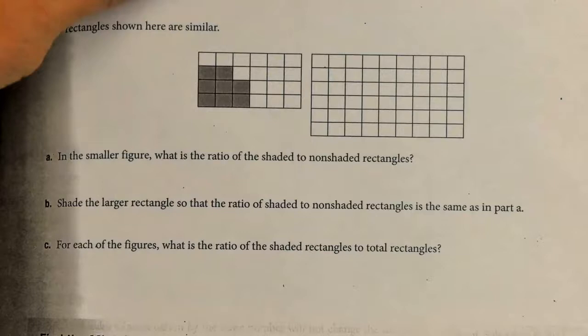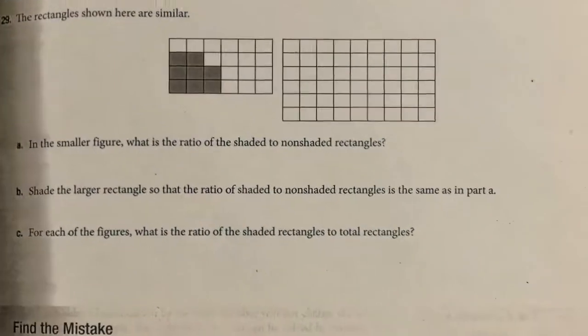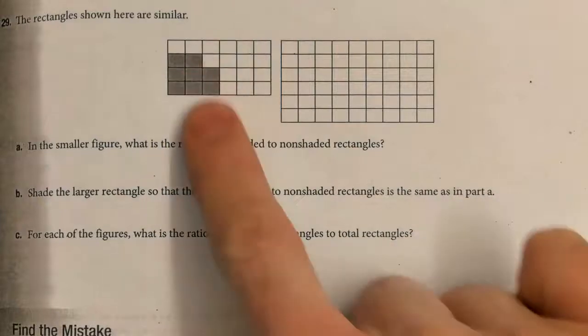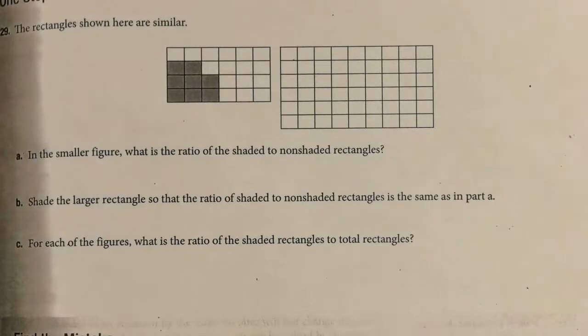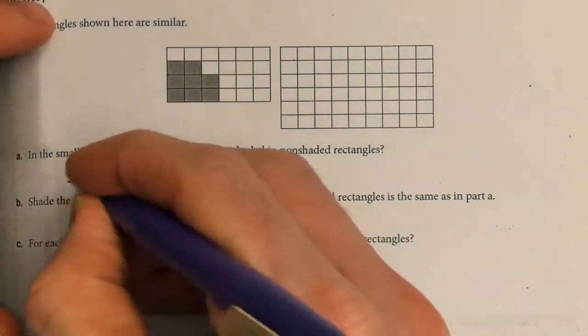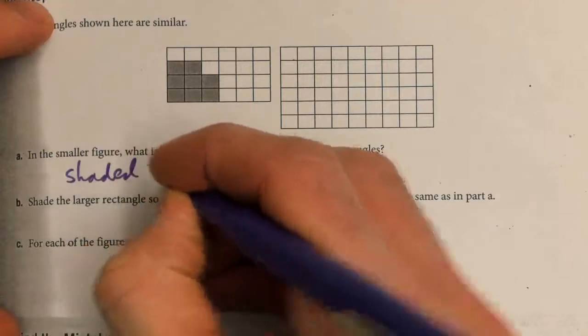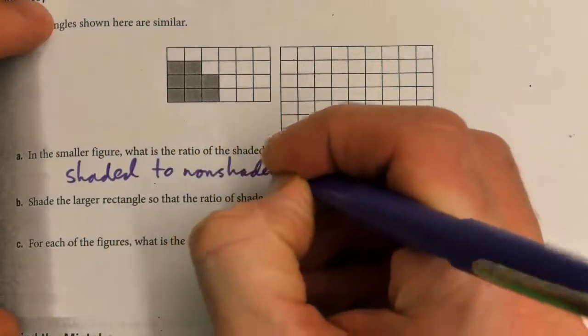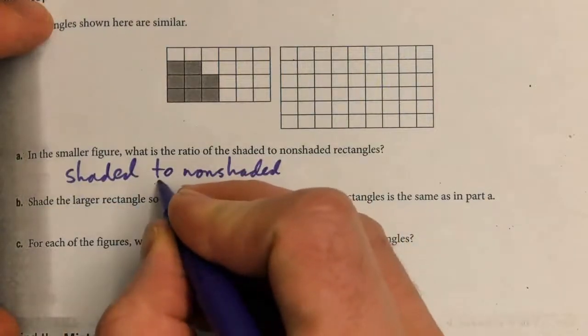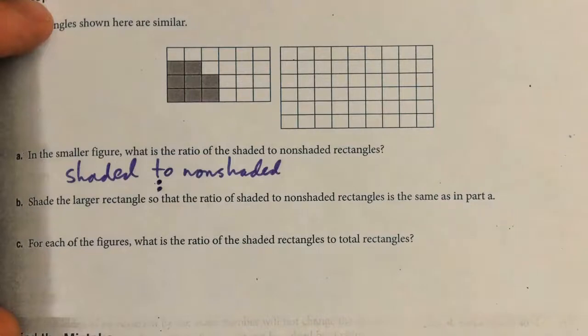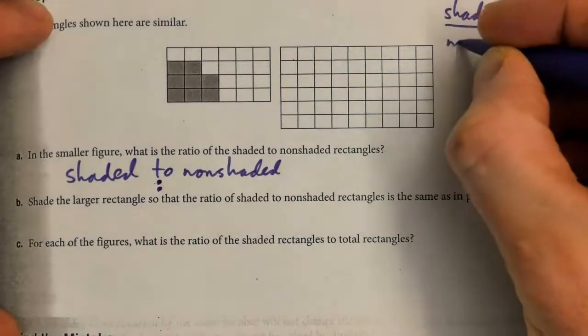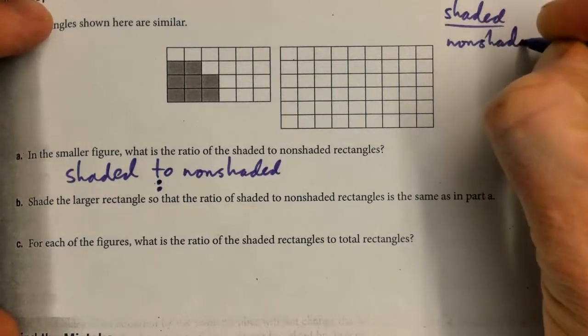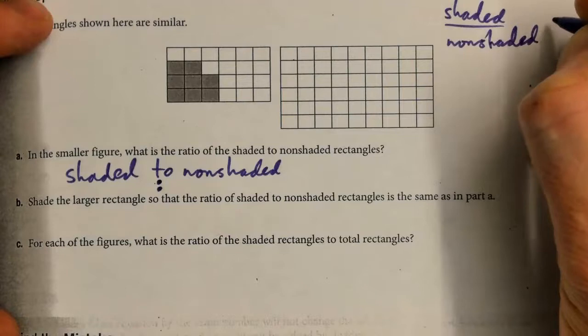In this video we're going to do this problem. In the smaller figure, what is the ratio of the shaded to non-shaded rectangles? There are different ways of writing a ratio: shaded to non-shaded, shaded colon non-shaded, or shaded over non-shaded as a fraction. I'm going to do shaded over non-shaded because we'll get it as a fraction and we might have to simplify it.